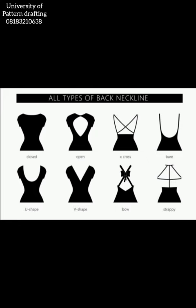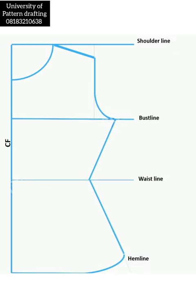So first off, what is a basic bodies pattern? A basic bodies pattern is the pattern for the top half of your body — from your shoulder to your hip line. It can be used to make blouses, jackets, coats, and so on. To draft your basic bodies pattern, you would need a couple of measurements.